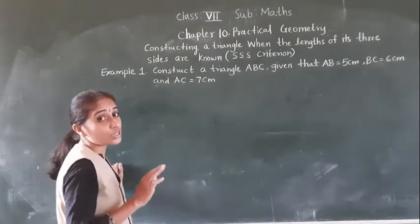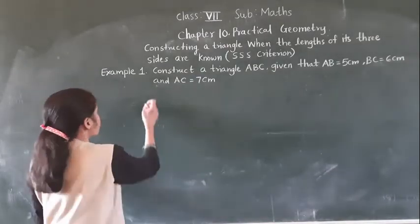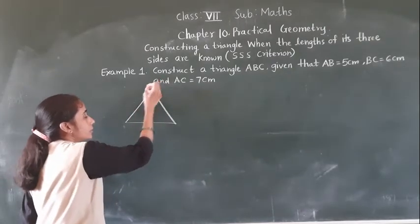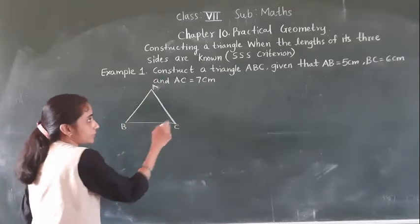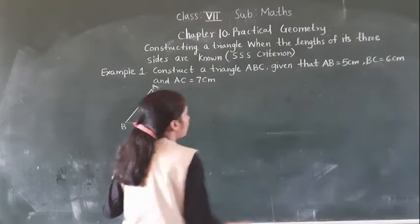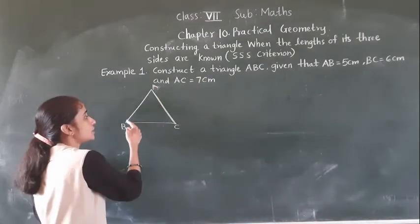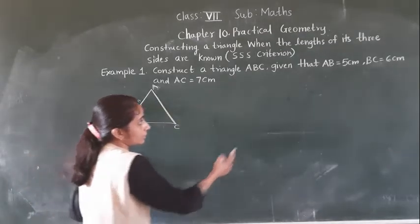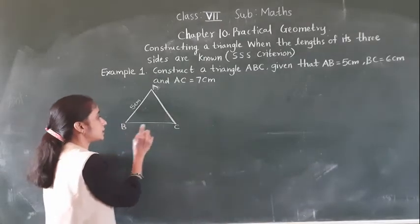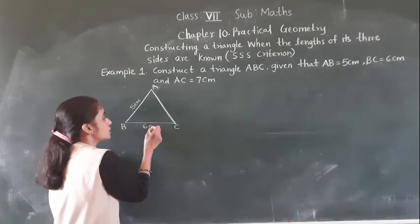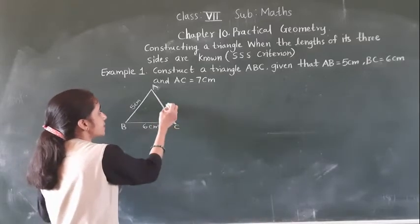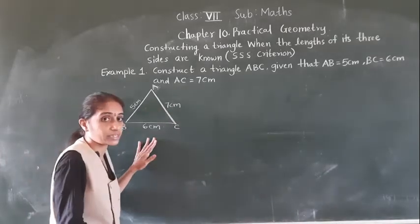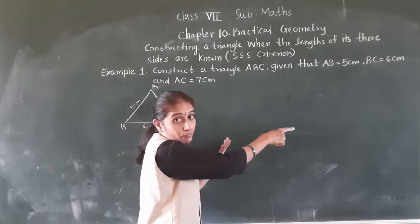First we draw the rough diagram of the triangle. I am going to name the vertices A, B, and C. Given that AB is equal to 5 cm, BC is equal to 6 cm, and AC is equal to 7 cm. This is the rough diagram to understand first. We have to construct the fair diagram for this.